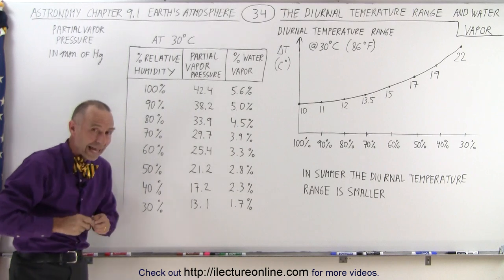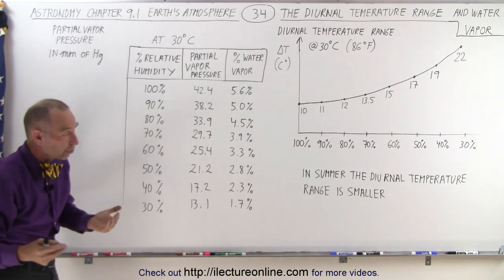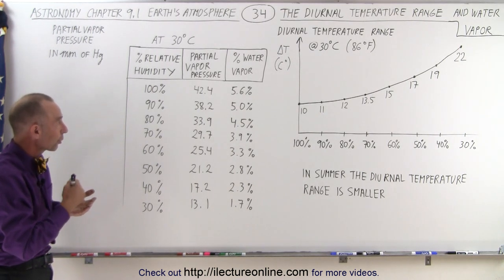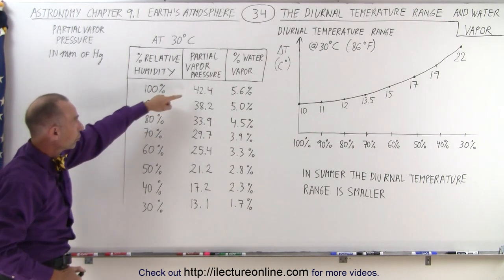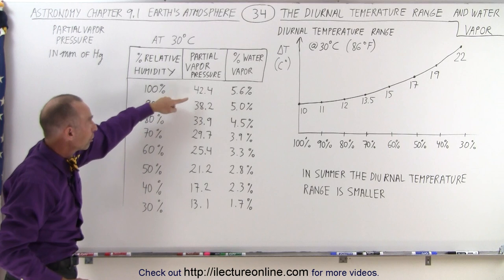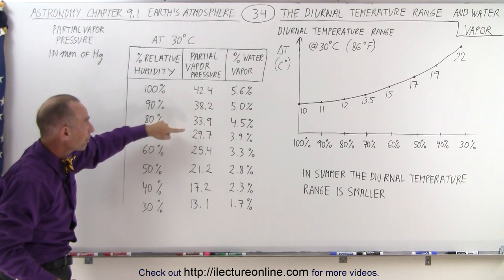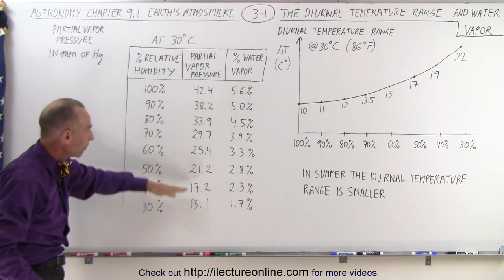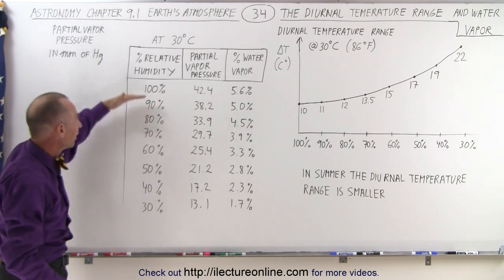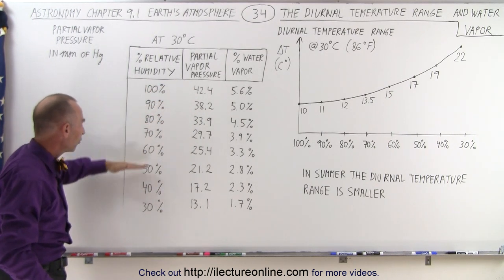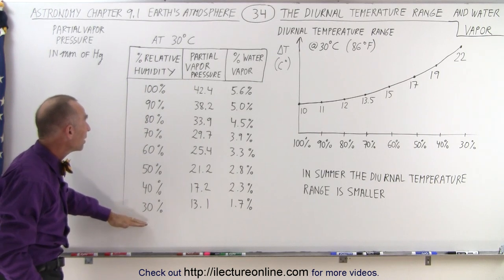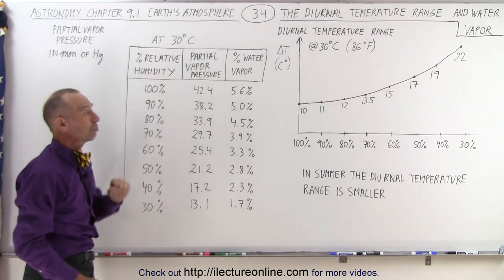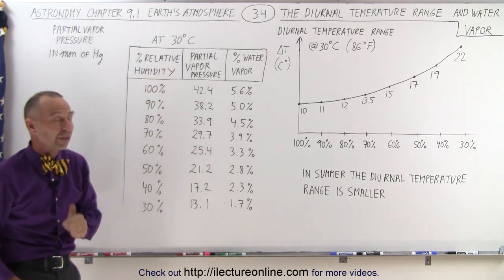Notice that the atmospheric pressure is about 760 millimeters of mercury, so this is what we call the partial vapor pressure of the amount of water vapor in the atmosphere for these various relative humidities at an air temperature of 30 degrees centigrade.